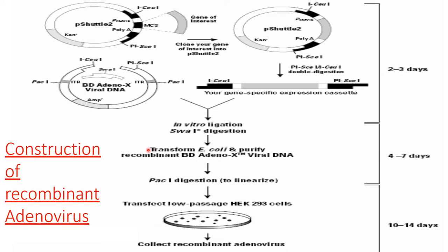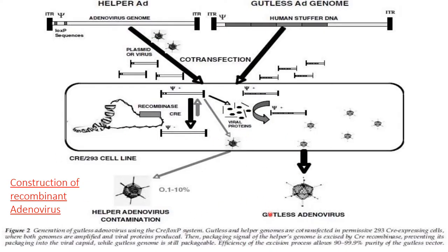The recombinant BD AdEno-X viral DNA is purified and then digested with PacI to linearize the gene of interest. The gene is then transfected and added to the HEK 293 cell line — a human embryonic kidney cell line — after which the recombinant adenovirus can be collected.